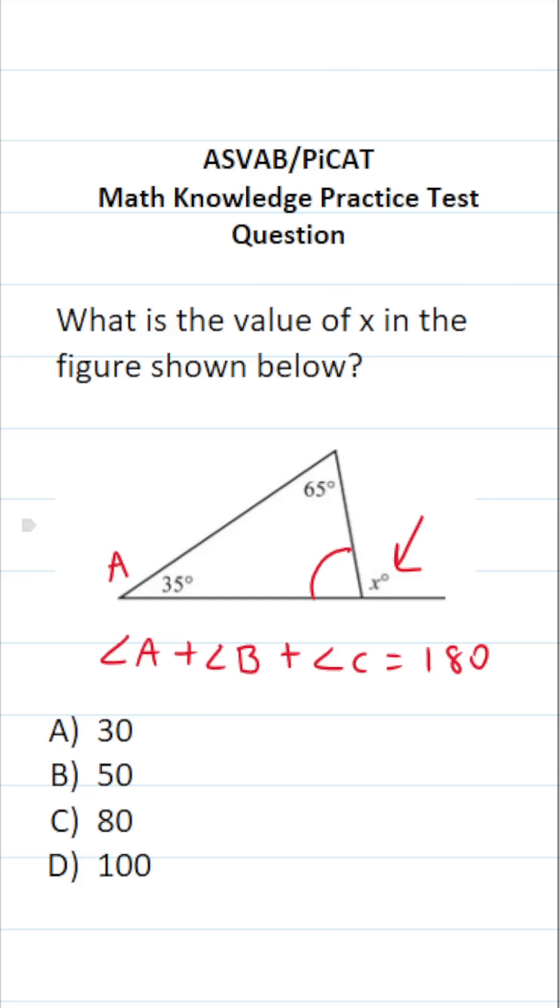I'm going to let angle A be 35, I'm going to let angle B be 65, and I'm going to let angle C be this unknown third angle in this triangle.